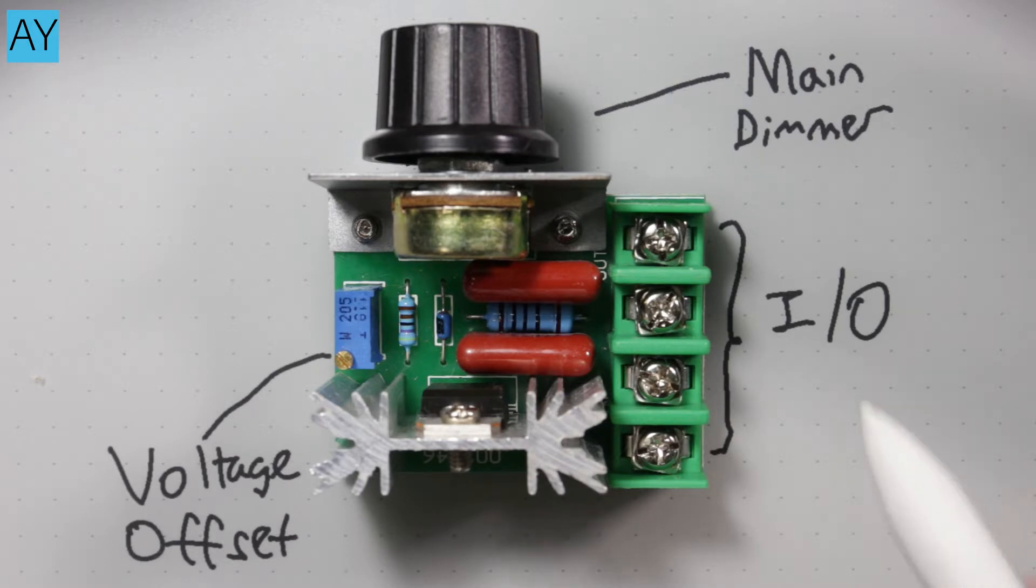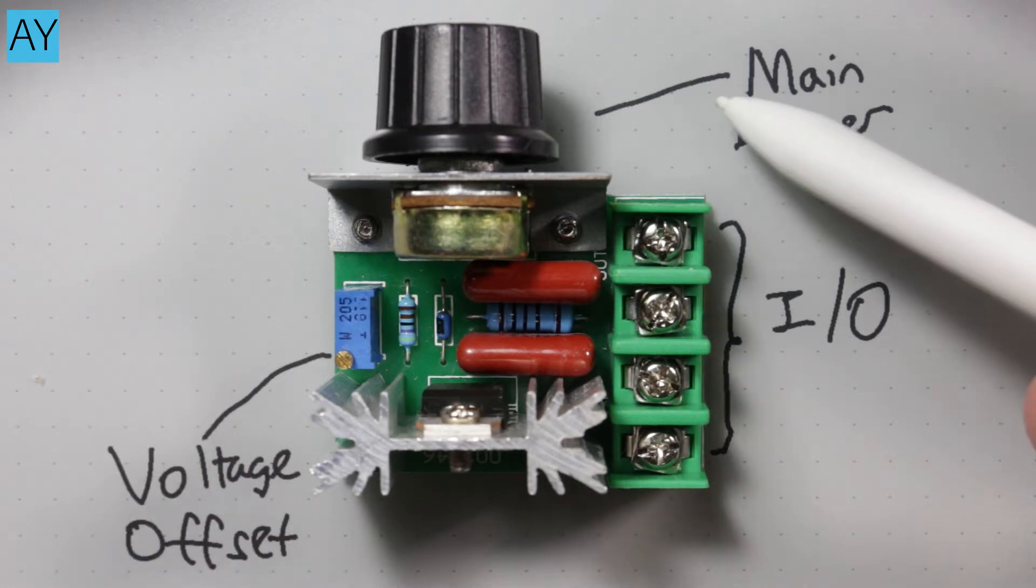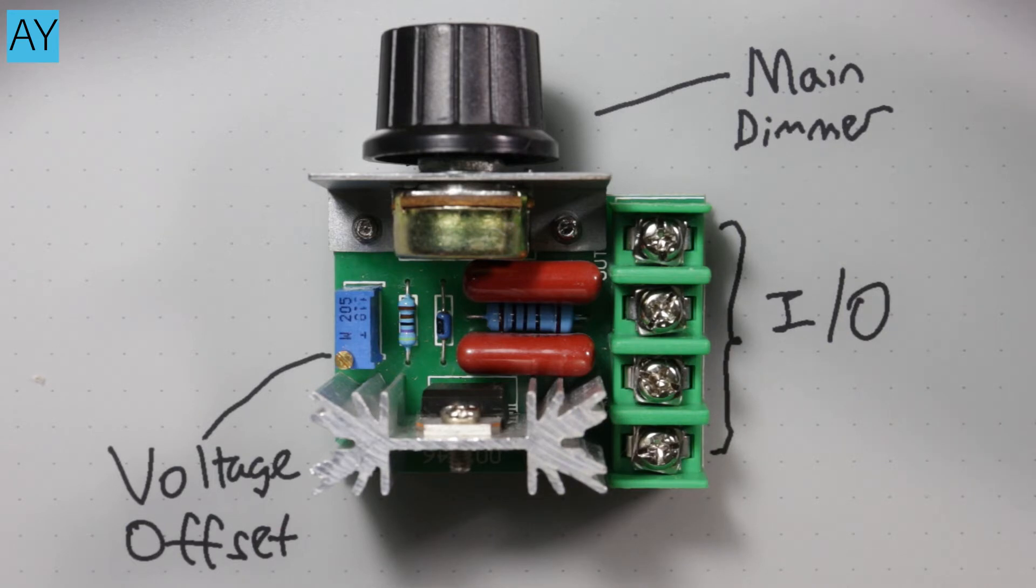So we have here your inputs and outputs and your main dimmer and your voltage offset. Basically this will allow you to trim exactly how much power the module will supply when the main dimmer is set at its lowest. Very easy to wire and very easy to set up.